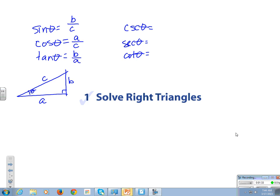And then the cosecant is the reciprocal of the sine. The secant is the reciprocal of the cosine. And the cotangent is the reciprocal of the tangent.